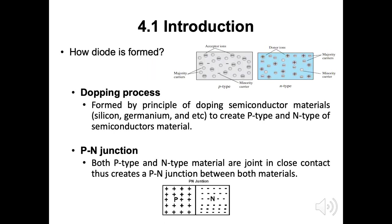How is a diode formed? The doping process, which was discussed last week, was the first idea to explain how N-type and P-type material is formed. The diode is initially formed by the principle of doping semiconductor materials such as silicon, germanium, and others to create P-type and N-type semiconductor materials. When these two materials, P and N, are connected to each other, a junction called a P-N junction is obtained. We can say that when both P-type and N-type materials are joined in close contact, a P-N junction is created between both materials, as shown in the figure.